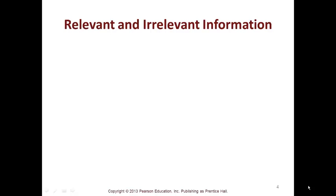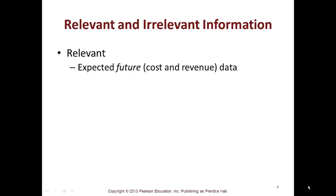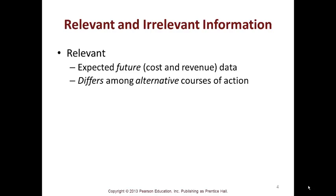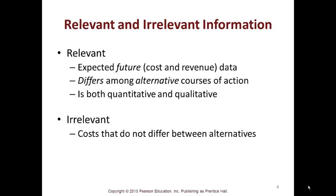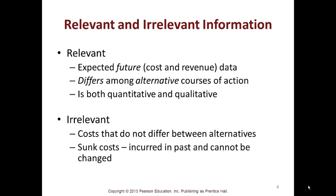Relevant and irrelevant information. Relevant is your expected future cost and revenue data that's relevant to the decision. It differs among alternative courses of action and is both quantitative and qualitative. Then there's irrelevant data: costs that do not differ between alternatives, and sunk costs which are incurred in the past and cannot be changed.